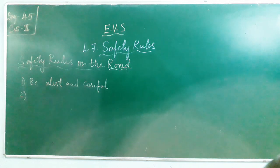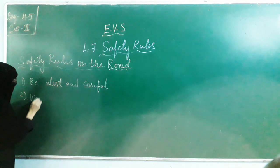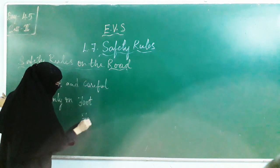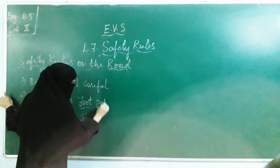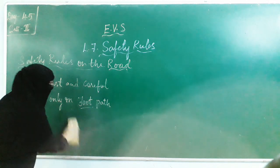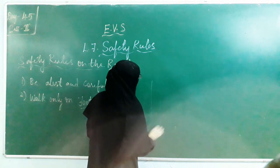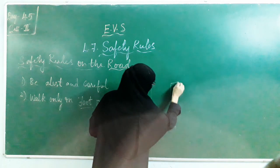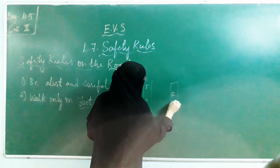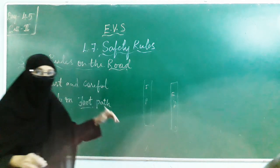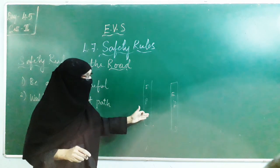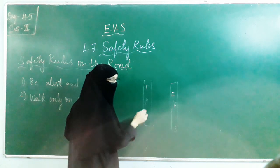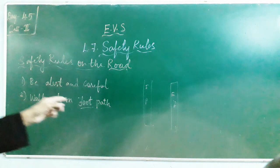And one more thing: walk only on the footpath. The footpath is the slightly raised area on either side of the road. It is for pedestrians — people who are walking. Vehicles use the road; people who are on foot use the footpath, which runs on either side of the road.